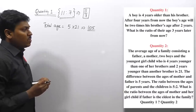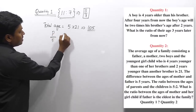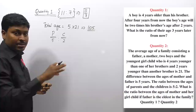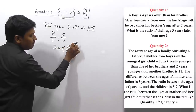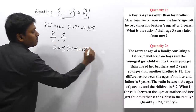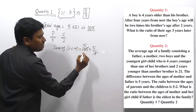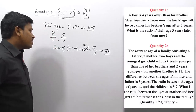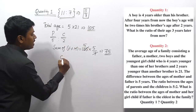Parents' combined age = (5/7) × 105 = 75. Children's combined age = 105 − 75 = 30. The father is eldest with a 5-year age difference from mother. So father = 40, mother = 35.